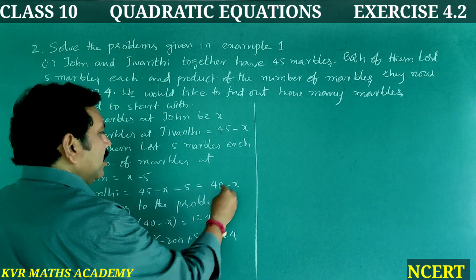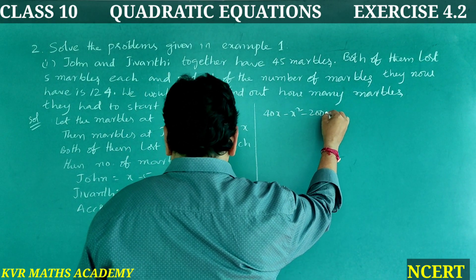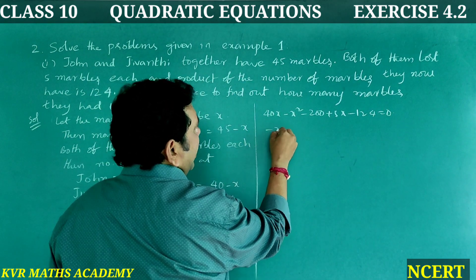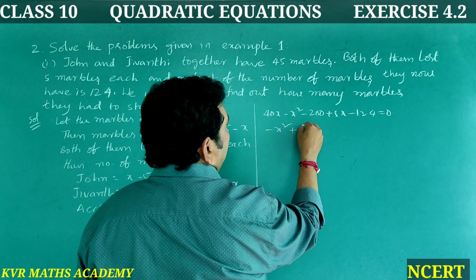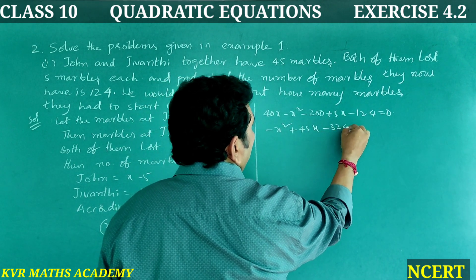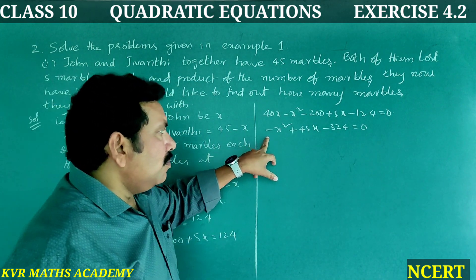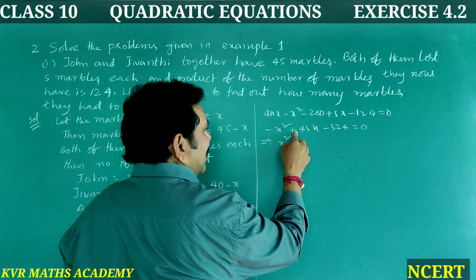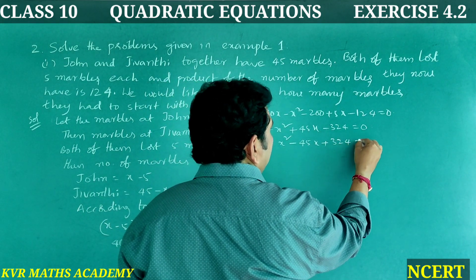Transfer 124 to the left side: 40x minus x squared minus 200 plus 5x minus 124 equals 0. Combining like terms: minus x squared plus 45x minus 324 equals 0. Multiplying both sides by minus 1: x squared minus 45x plus 324 equals 0.